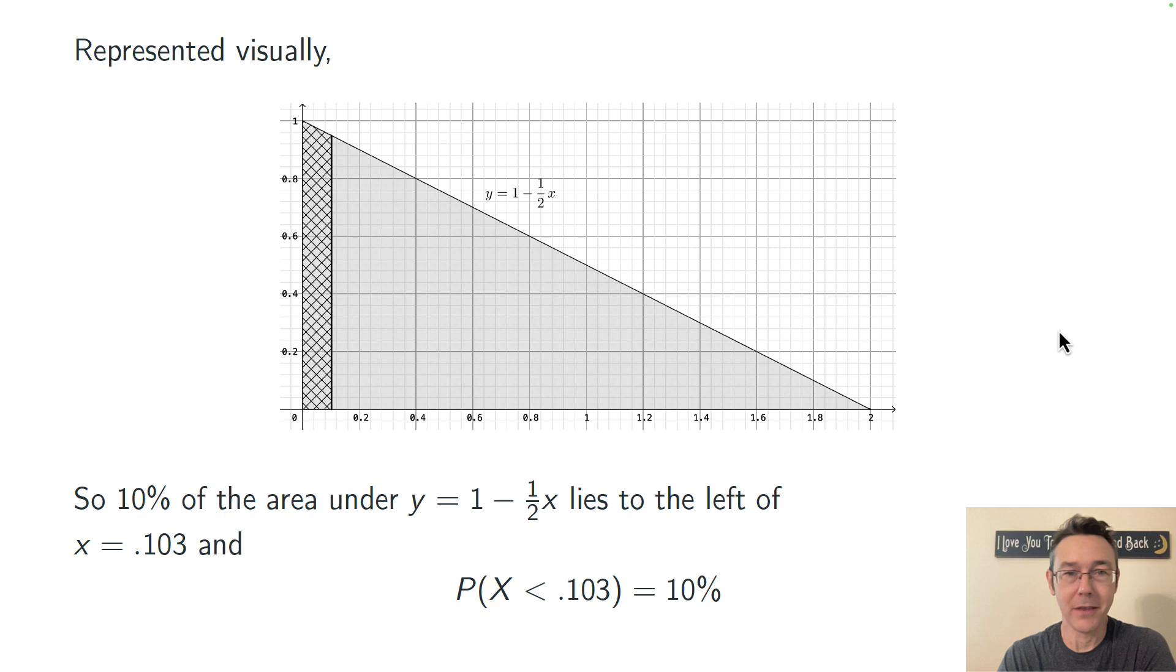Here it is visually, which I think really helps. I have drawn a triangle that represents this PDF. You can see the support from 0 to 2. That total shaded area is going to have to be 1 because it's a legitimate probability distribution. And I've labeled what I've said is the 10th percentile, 0.103. And the idea here is that the crosshatched area to the left should represent 10% of the total area under that distribution.